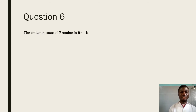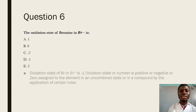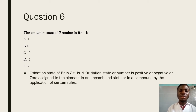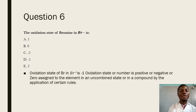Question 6 says: the oxidation state of bromine in the bromide ion is — from what we can see, we have the bromide ion. The oxidation state is any positive or negative number or zero assigned to an element in an uncombined state or in a compound by applying certain rules. The bromide ion, being simply alone, has an oxidation state of minus 1, giving an answer of Z.